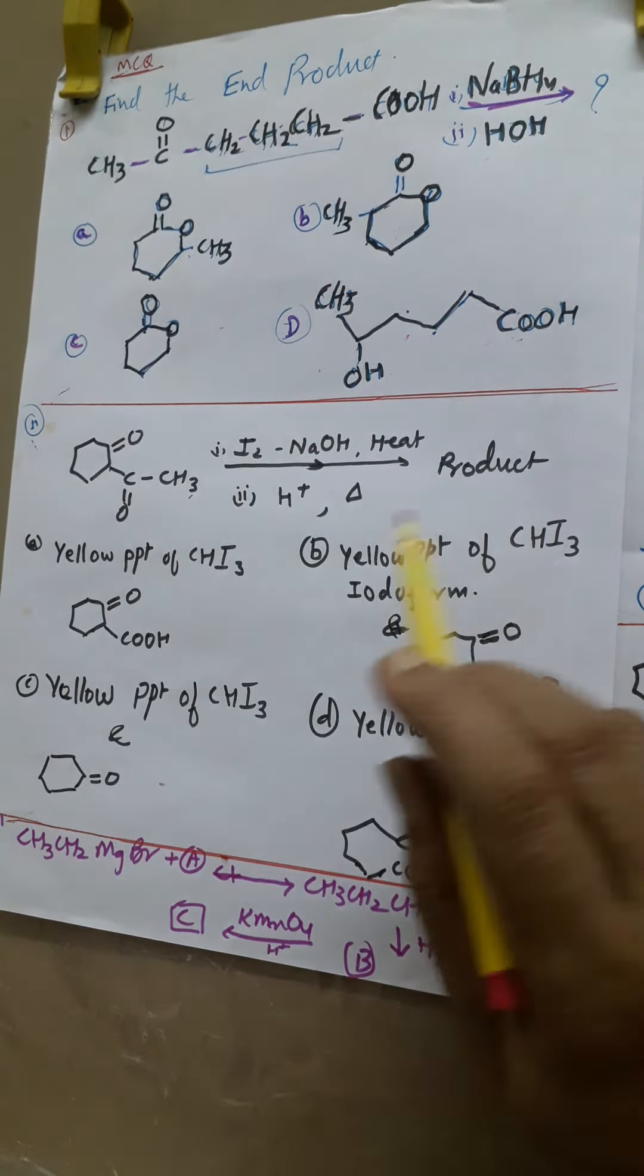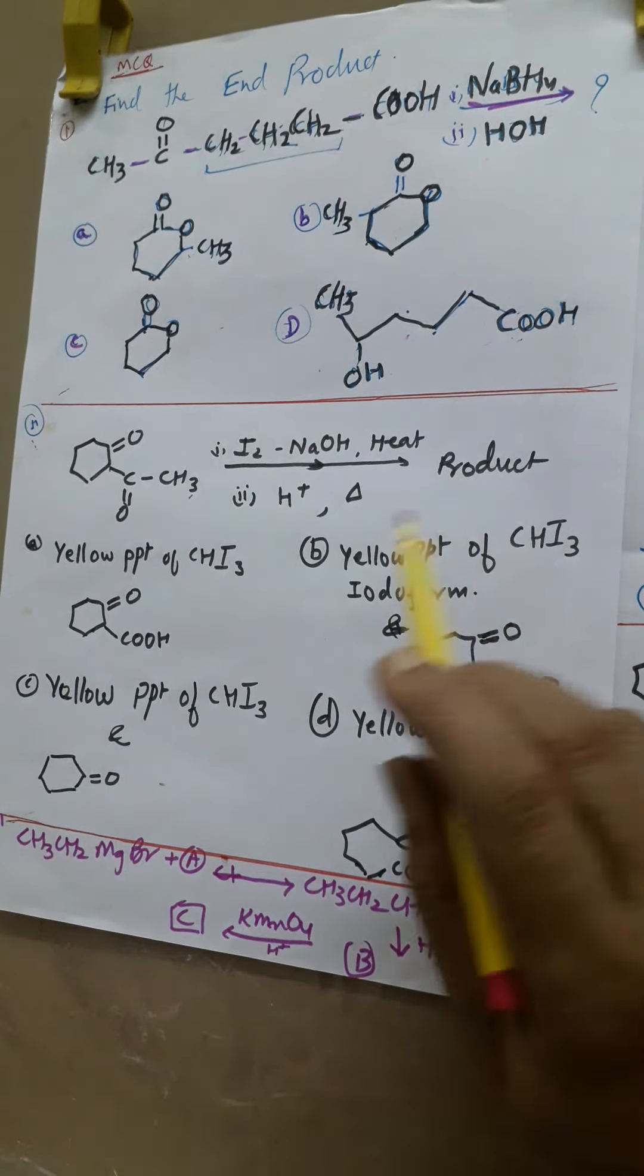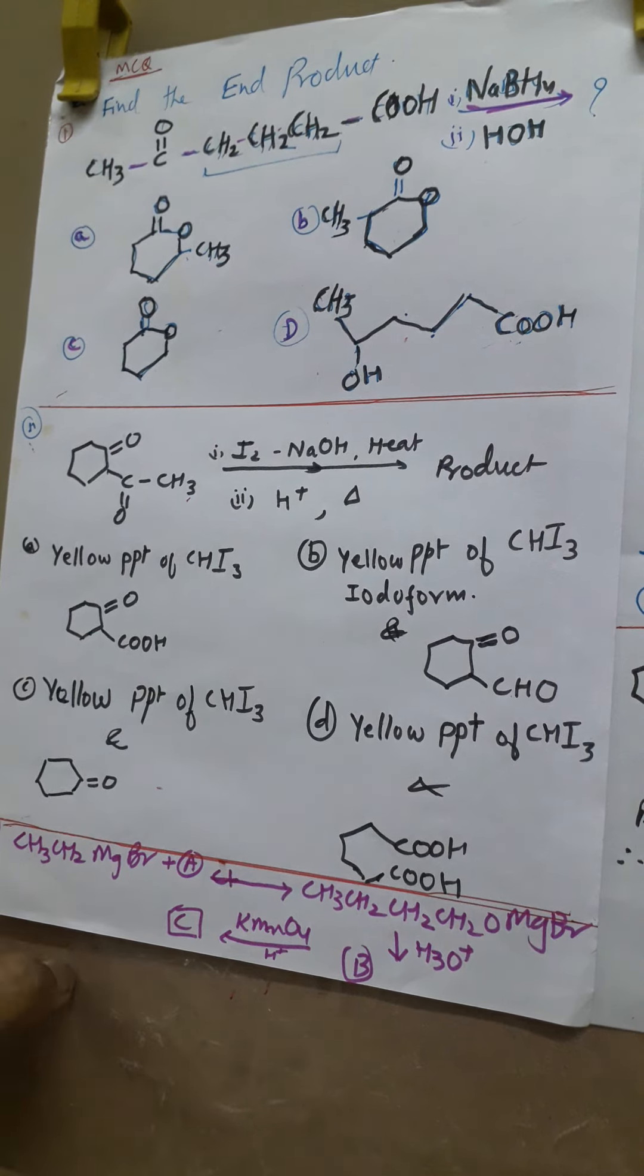Now in third case here, this is missing link because here Grignard reagent is given to you and they are asking what we have to add A. So we will get the CH3-CH2-CH2-OMgBr and then followed by hydrolysis you will add B, and with KMnO4 with oxidation we will get C. So see here A, B and C, these three intermediates or reagents you have to find out. Try yourself, write down everything and then we will discuss the answer.